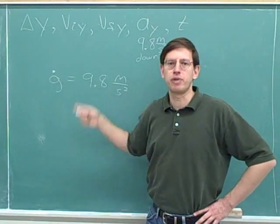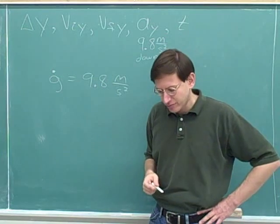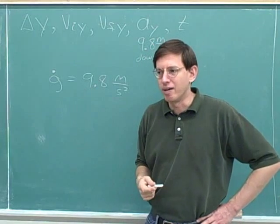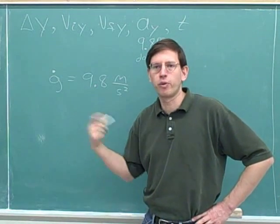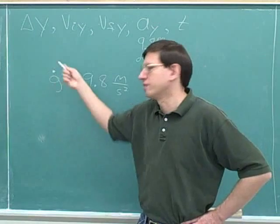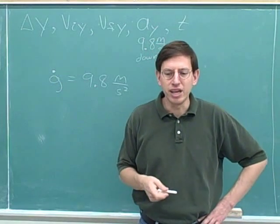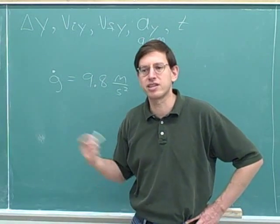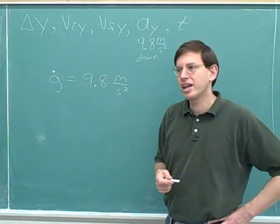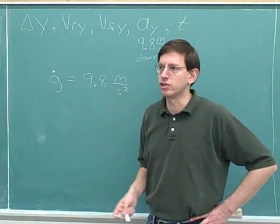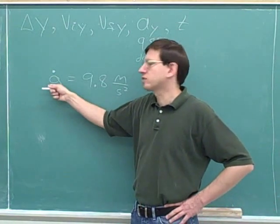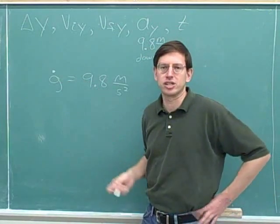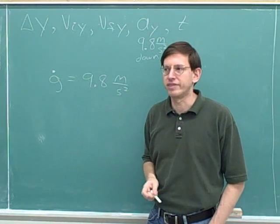It's not gravity — it's the acceleration due to gravity. And in other contexts, you might talk about the force due to gravity. Later in your course, you'll be talking about the force due to gravity. Right now, we're talking about the acceleration due to gravity. It's kind of meaningless just to say gravity is 9.8 meters per second squared. Do you mean the acceleration or the force? The correct way to pronounce this symbol is that it's the acceleration due to gravity.